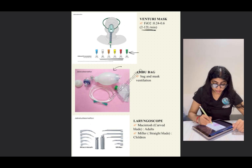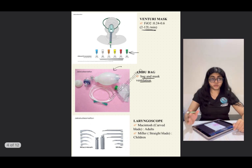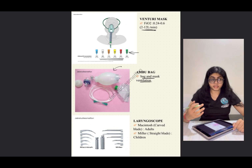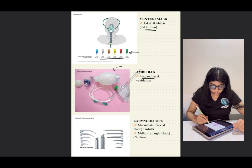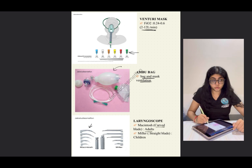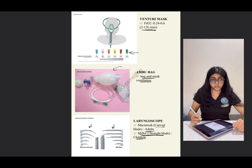The Ambu bag is used for bag and mask ventilation. A laryngoscope is used to insert an endotracheal tube for intubation. Remember that Macintosh blades are curved and used in adults, whereas Miller blades are straight and used in children.